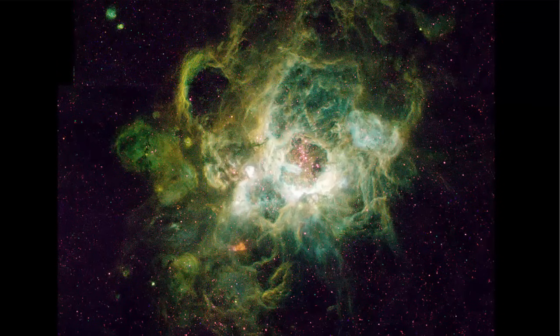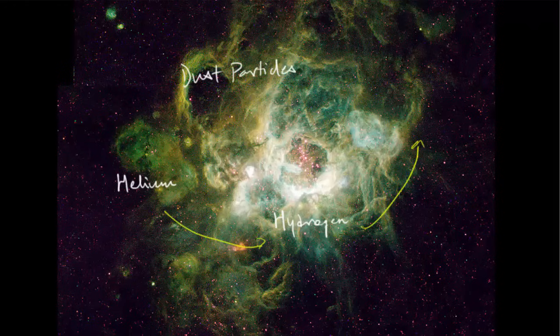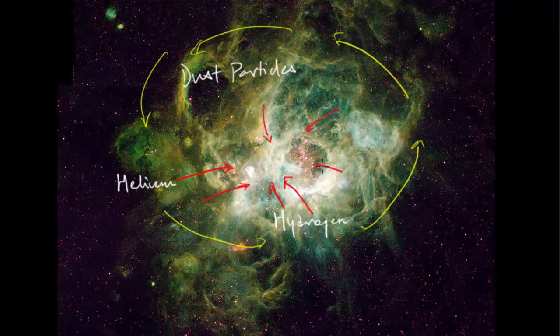What happened was initially there was this nebula cloud, which is made of helium, hydrogen and other sorts of dust particles. This cloud started rotating very heavily, and due to that, most of the hydrogen and helium elements came to the center and started colliding with each other.